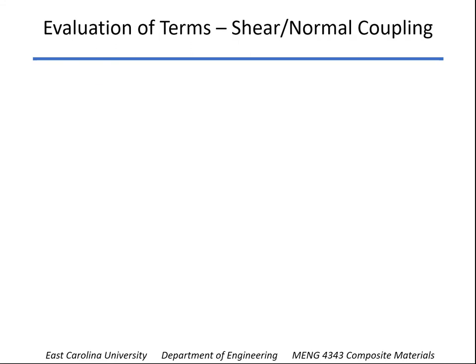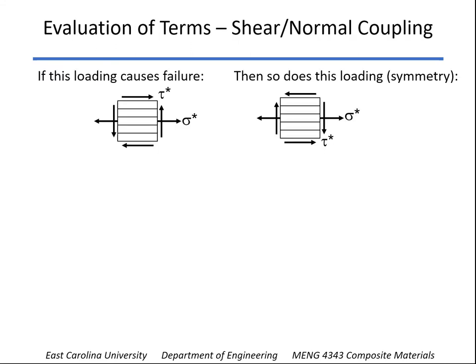Now, there's a couple of coupling terms here. And let's take a look at if we consider that whatever loading we have here, whatever combination of stress sigma-1 and shear stress tau, that if that loading causes failure, because of symmetry, if we change the direction of the shear stress, those same values will also cause failure.